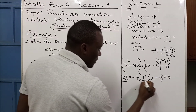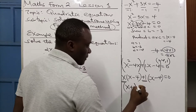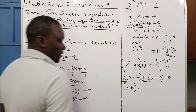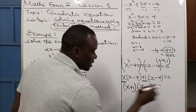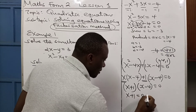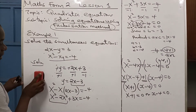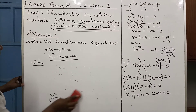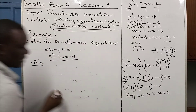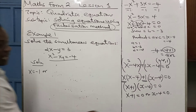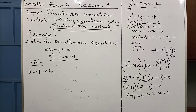We take the terms outside the brackets. Setting each factor to zero: x plus 1 equals zero gives x equals minus 1, and x minus 4 equals zero gives x equals positive 4. Those are the two values of x, but we still need to find the corresponding values of y.